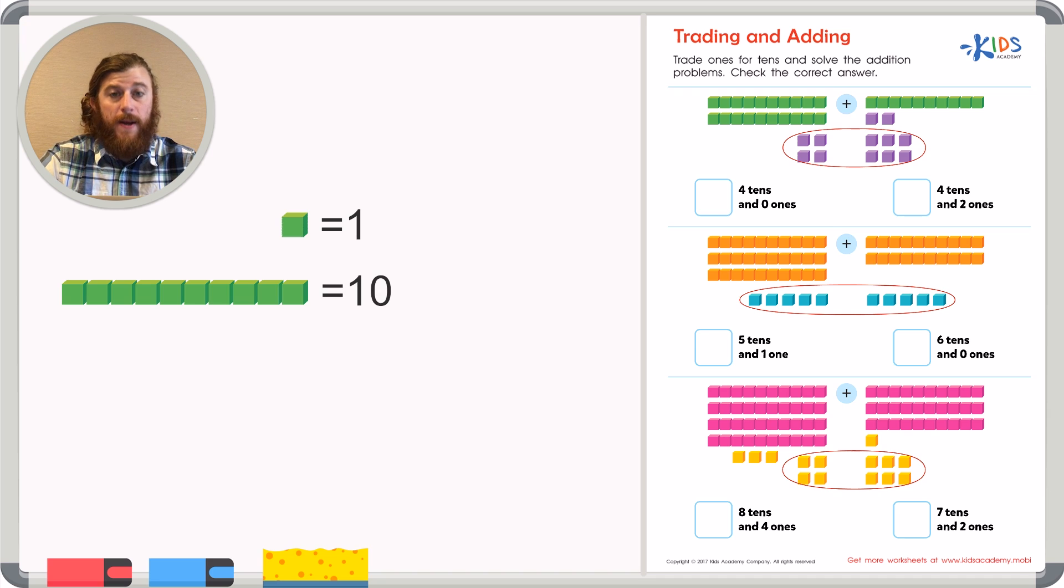Remember, one cube represents just one and one long represents 10 individual cubes. This means that if I had 10 individual cubes spaced out like this, I could trade them for one long. Both 10 individual cubes and one long represent the number 10.